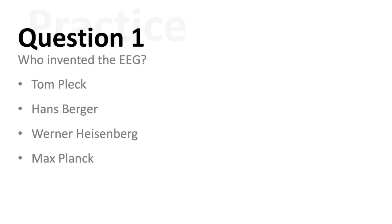Question one. Who invented the EEG? This is a question that will come up a lot. Was it Tom Pleck, Hans Berger, Warner Heisenberg, or Max Planck? I'll give you three seconds. Well, if you answered Hans Berger, you'd be correct. Tom Pleck I made up, and the other two names are famous German physicists.